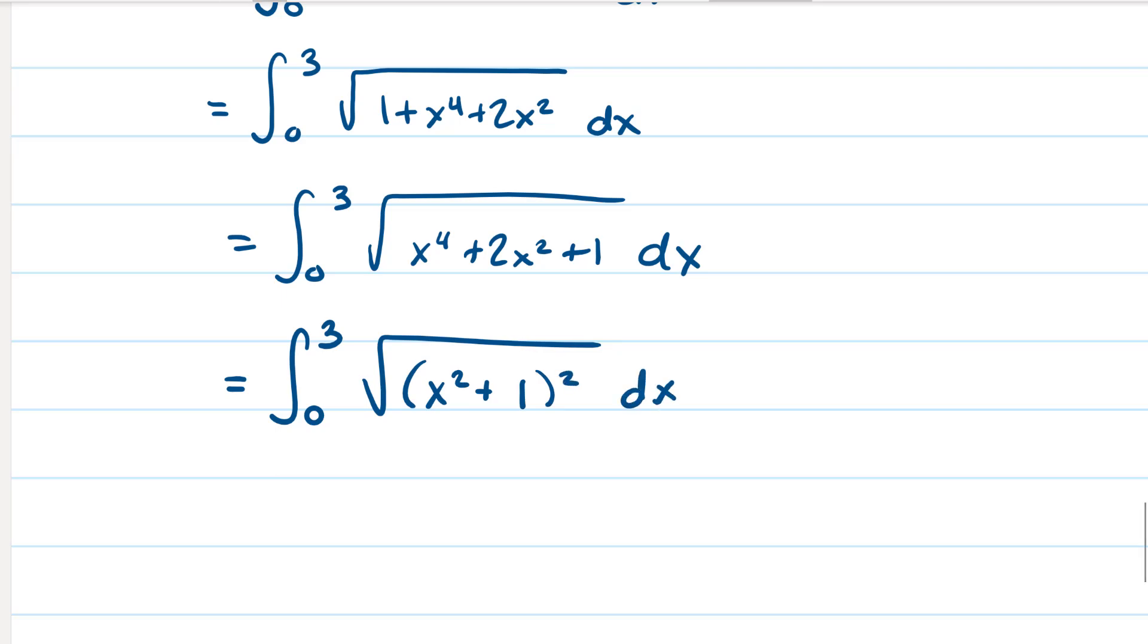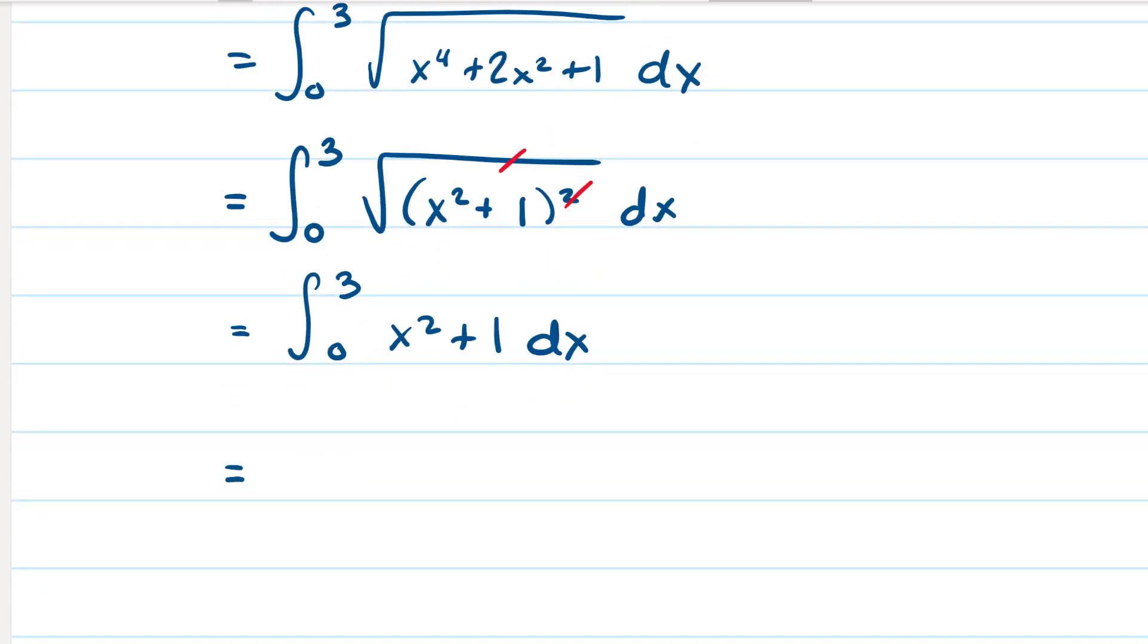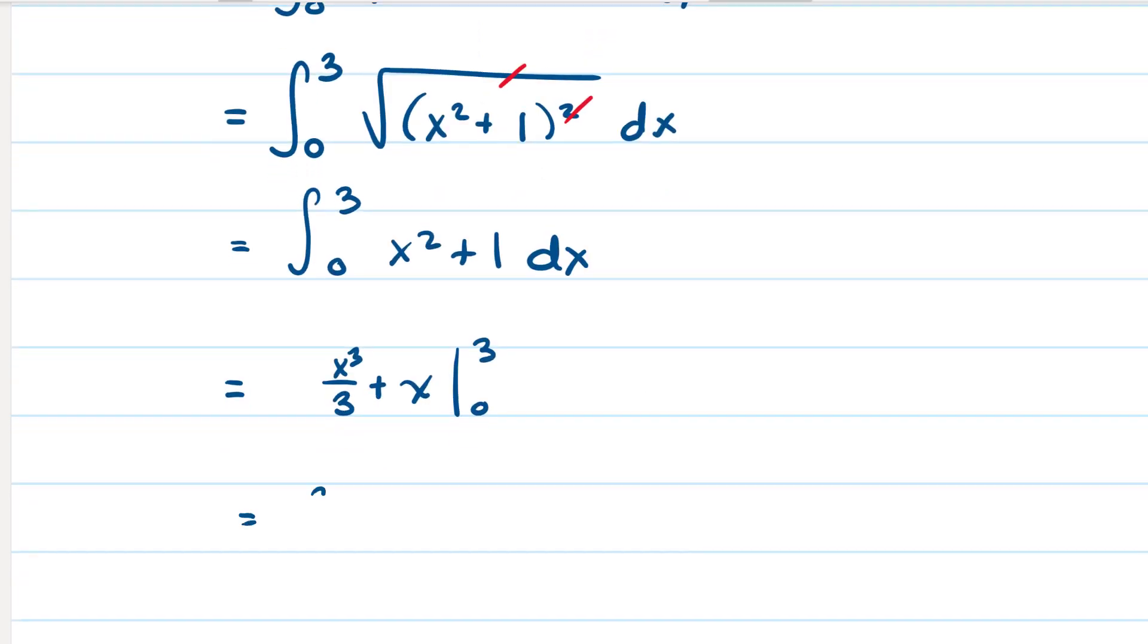So the square root and the 2 cancel. So this becomes the integral from 0 to 3 of x squared plus 1. When you do the antiderivative, you get x cubed over 3 plus x from 0 to 3. And that's it. It's basically just plugging things into an equation and then working them out.